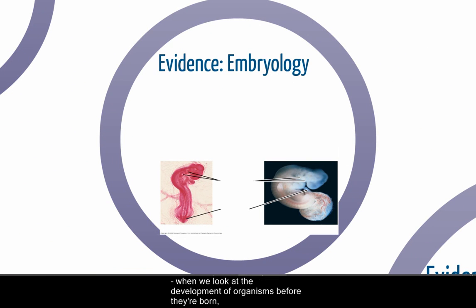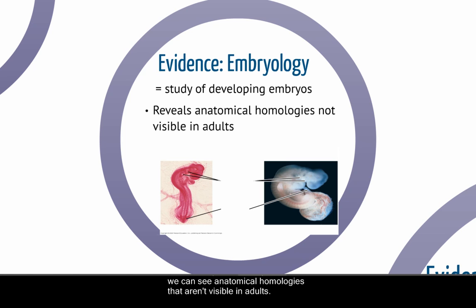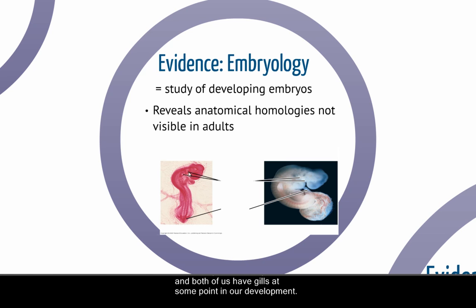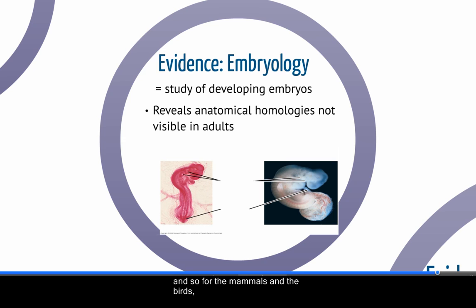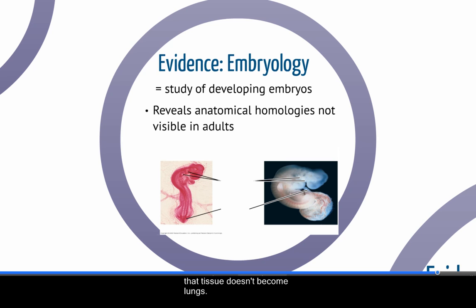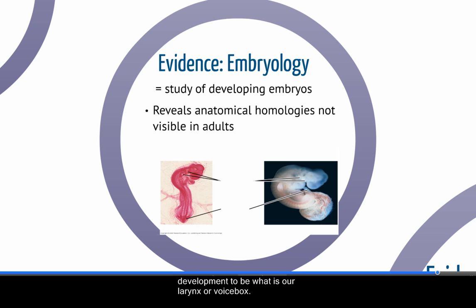Embryology — looking at the development of organisms before they're born — reveals anatomical homologies not visible in adults. Specifically, both humans and chickens have a tail and gills at some point in development. Obviously, neither of us need gills anymore. For mammals and birds living on land, that gill tissue doesn't become lungs — you don't change function in tissues like that. Instead, that tissue becomes modified later in development to form what is our larynx, or voice box. The vibrating bands of tissue that allow me to speak started out as gills when I was a ten-week-old embryo.